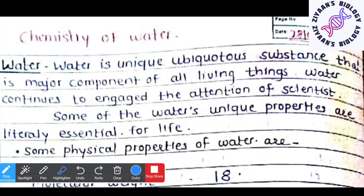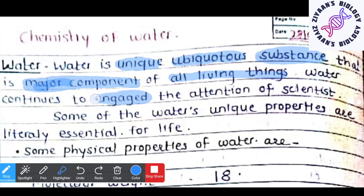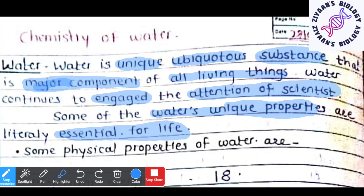Basically we are dealing with the introductory portion first. Water is a unique, ubiquitous substance — ubiquitous meaning it is found everywhere. Water is the major component of all living things and it continues to engage the attention of scientists. Some of water's unique properties are literally essential for life.